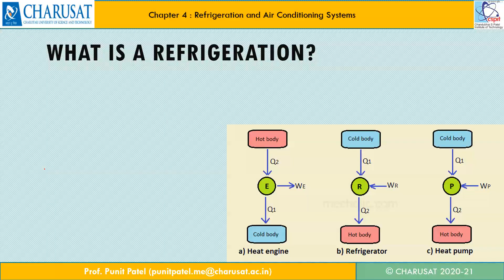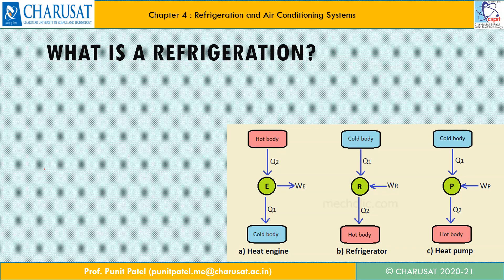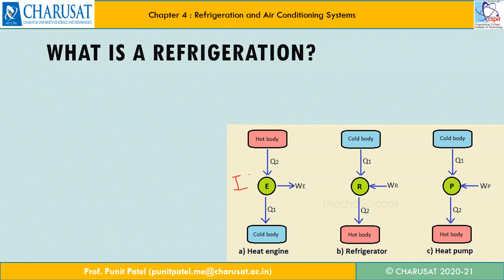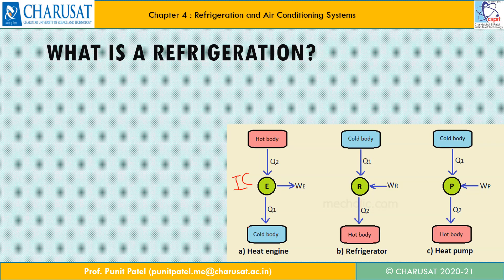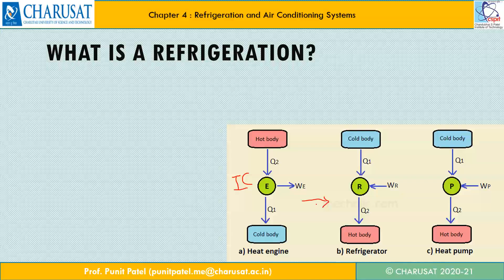Let us talk about the refrigerator. We know that a heat engine takes heat from a hot body at a higher temperature and rejects energy to the cold body at a lower temperature — that is nothing but our heat engine, which is our IC engine. If we operate it in a reverse direction, it means heat is taken from the cold body and rejected to the hot body with the help of external mechanical work. That is known as a reverse heat engine, and this principle is used in two devices: the first is refrigerator and second is heat pump.